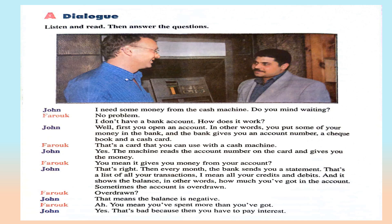I need some money from the cash machine — do you mind waiting? No problem. I don't have a bank account — how does it work? First, you open an account; in other words, you put some of your money in the bank, and the bank gives you an account number, checkbook, and a cash card. That's a card you can use with the cash machine. The machine reads the account number on the card and gives you money.